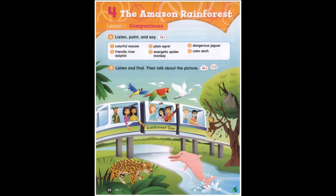A. Listen, point, and say. 1. Colorful macaw. 2. Plain egret. 3. Dangerous jaguar. 4. Friendly river dolphin. 5. Energetic spider monkey. 6. Calm sloth.